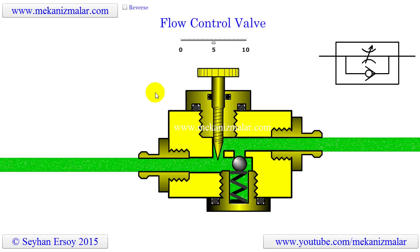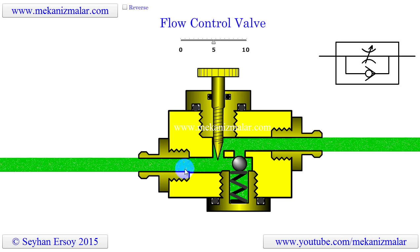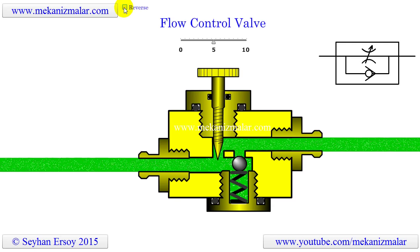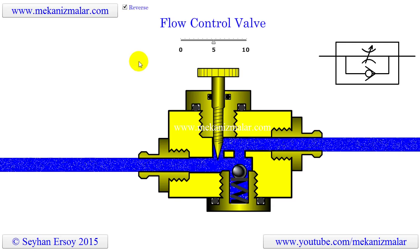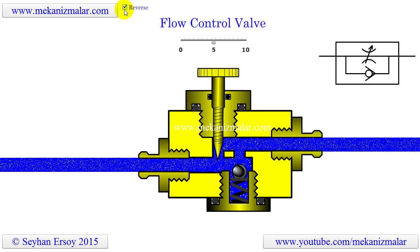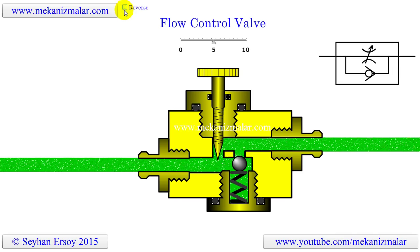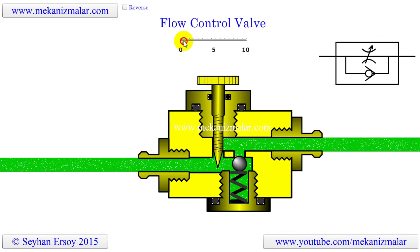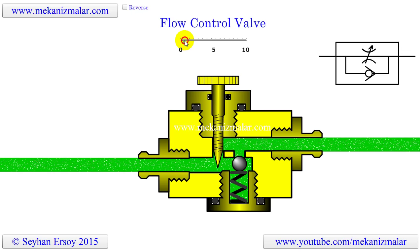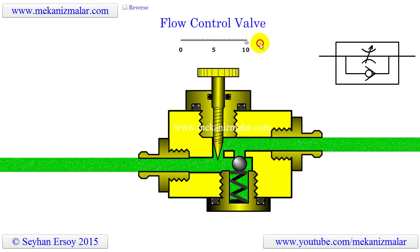In this animation, the high pressure flow going toward the cylinder is shown with green color, and the low pressure return flow is shown with blue color. By changing the needle position we can change the flow rate going toward the cylinder. This way the forward speed of the piston of a cylinder can be fine-tuned.